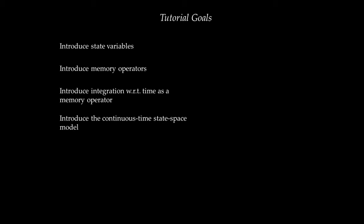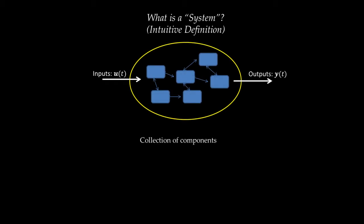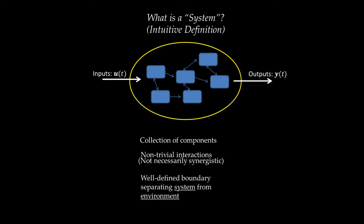Before we go into state variables, memory operators, and state-space models, I would like to go back to the previous tutorial on dynamic systems — to this idea that intuitively a system is a collection of components that have nontrivial interactions among them, not necessarily synergistic, and have a well-defined boundary separating the system from its environment. A system is dynamic if and only if it has memory.